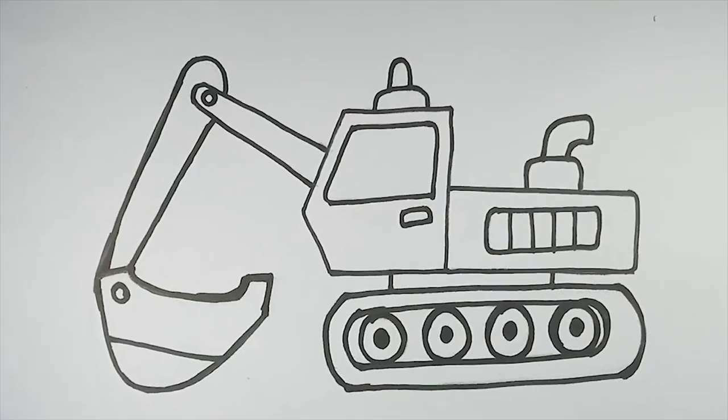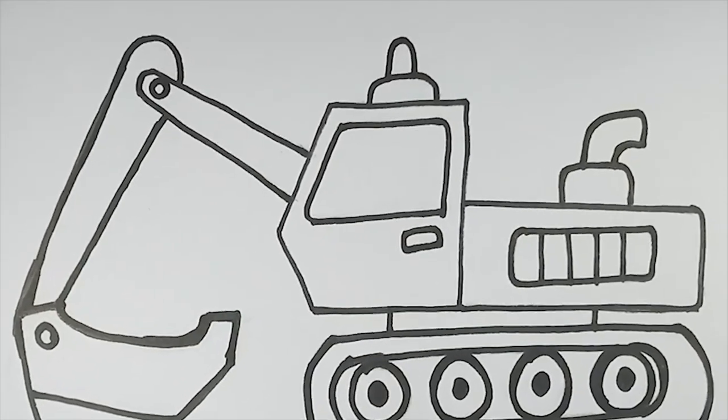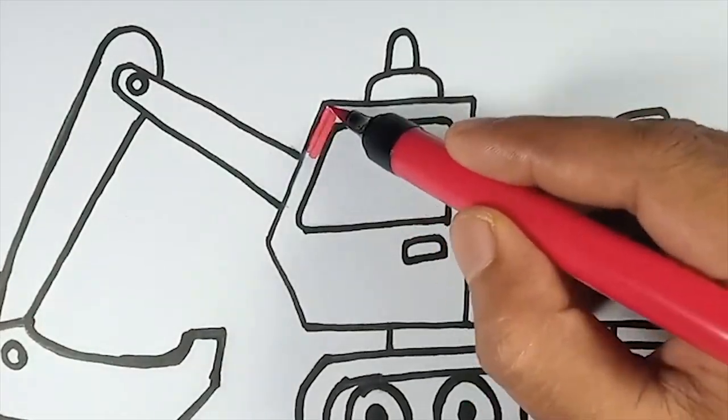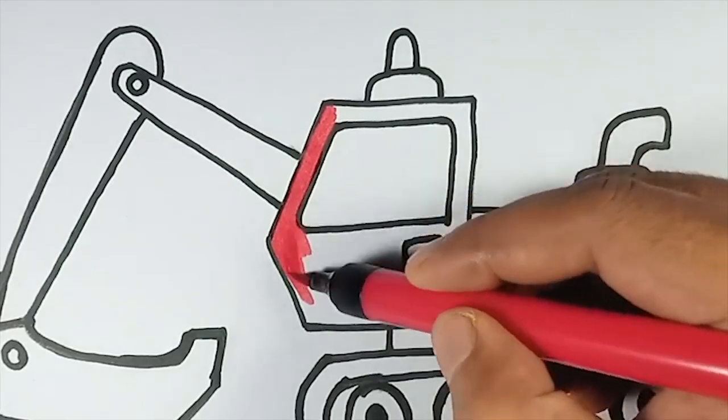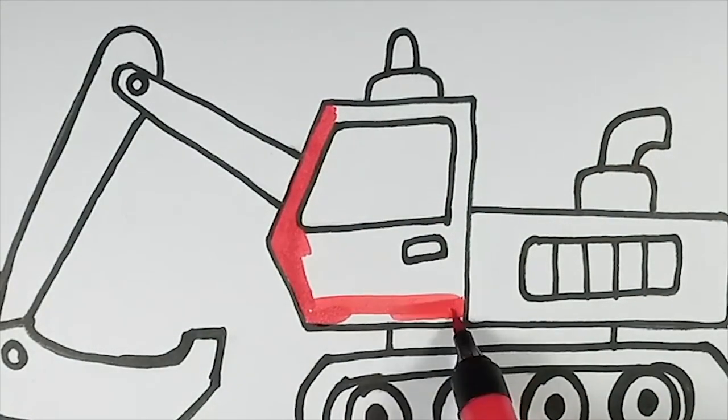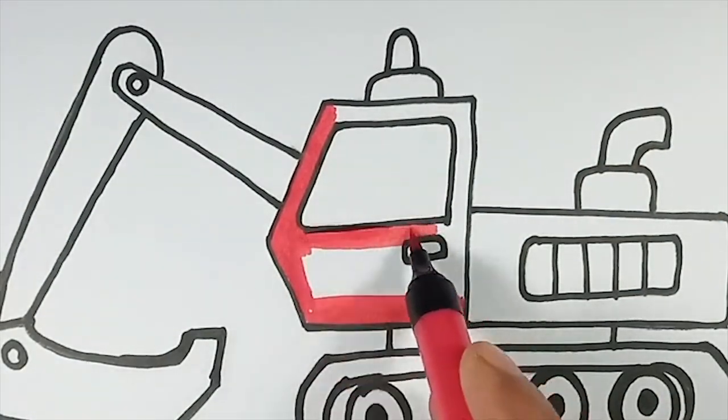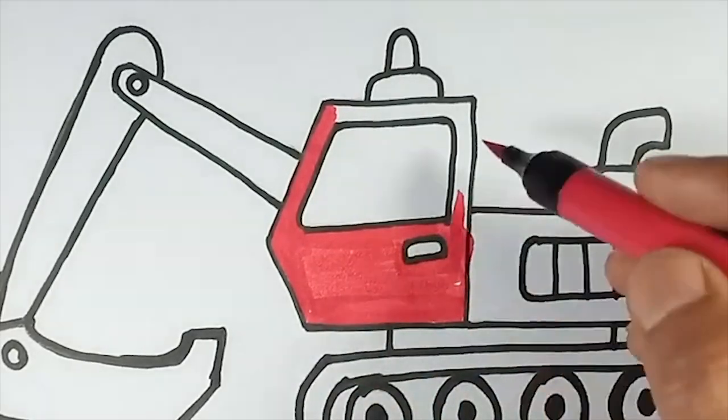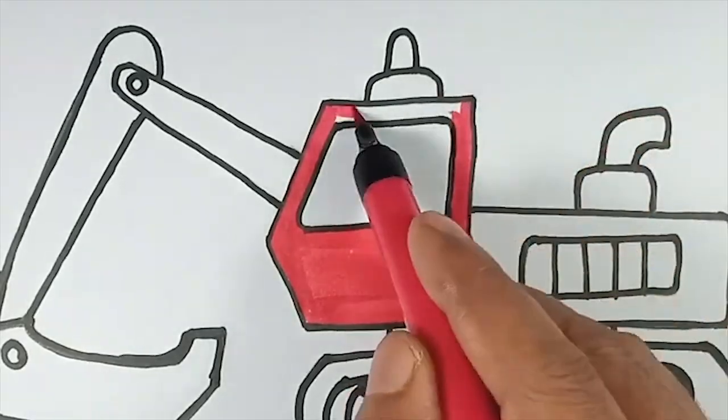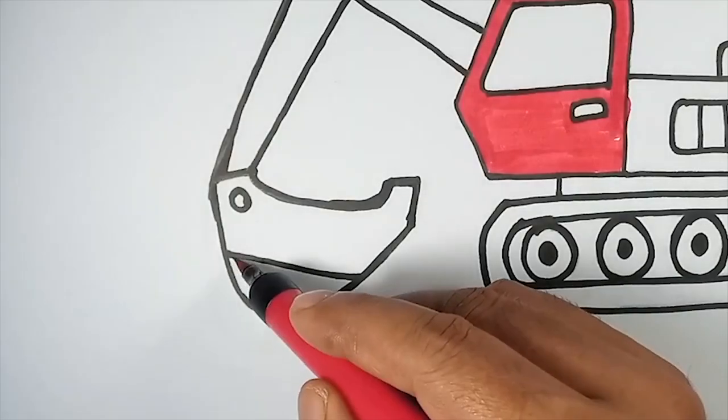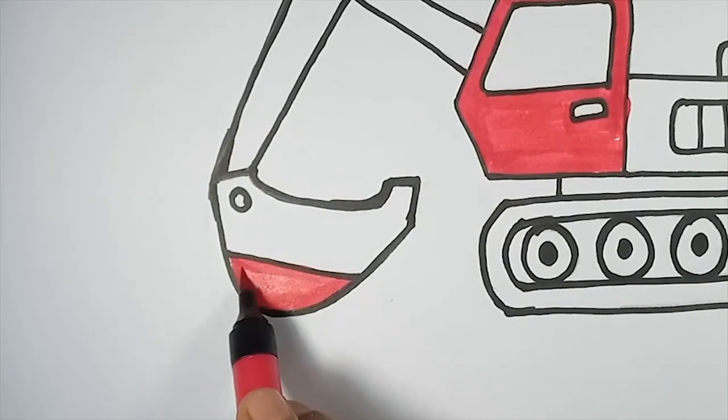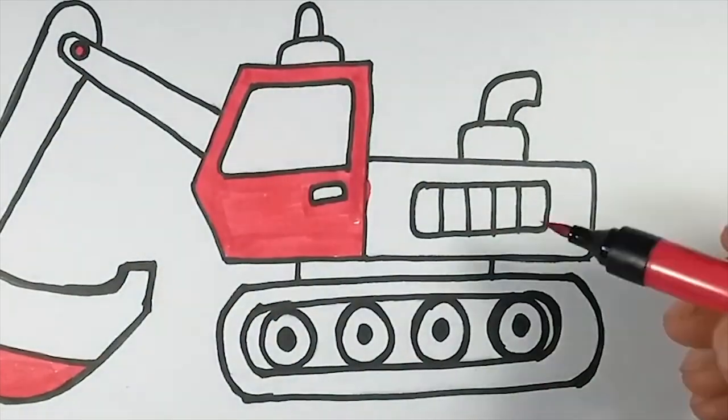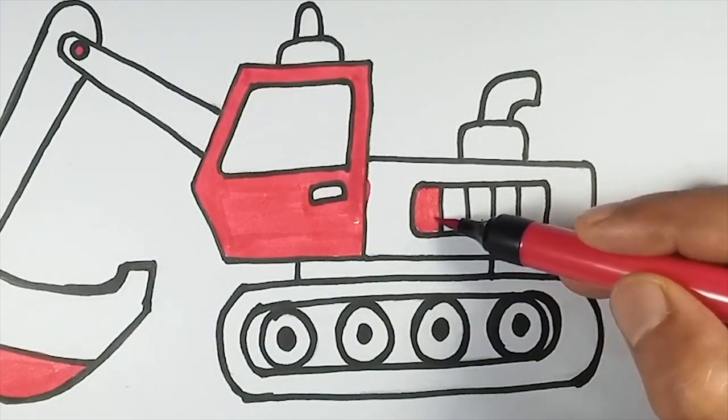With your outline complete, it's time to add some color. Grab your brush pen and let's make this excavator come to life. You can choose any colors you like. Maybe a red and green for the body and a deep blue or purple for the tires.